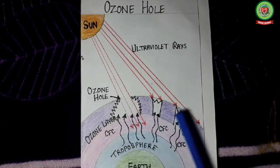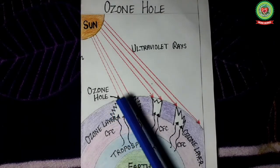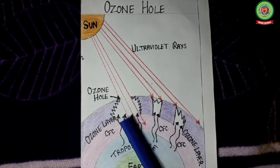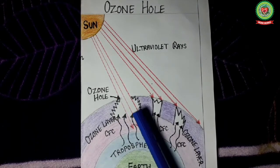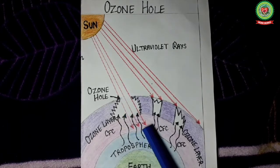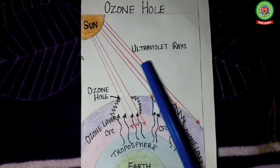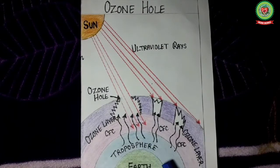Ozone hole is a part of ozone layer with little or no ozone. So from these layers the harmful ultraviolet rays can reach the earth surface.